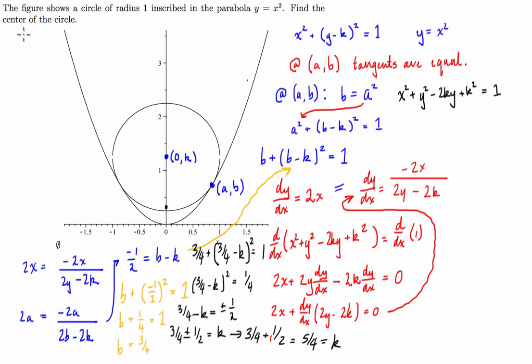Find the center of the circle. Therefore, the center of the circle is 0 comma 5 on 4.